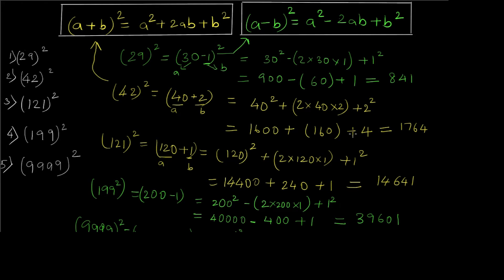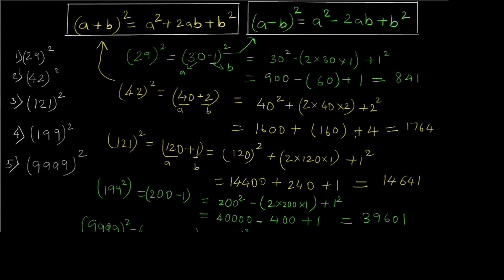This is how you can smartly calculate squares of numbers by representing them in (a+b)² or (a-b)² format. This will speed up your calculations and help you in your aptitude exams. Such questions are frequently asked, and the best way to tackle them is using these tricks and techniques. If you like this video, give it a thumbs up and don't forget to subscribe to the channel. Peace.